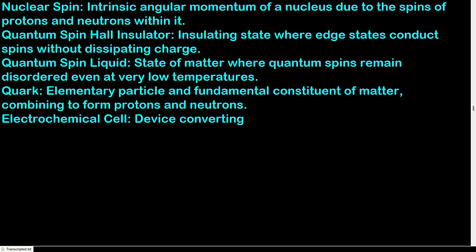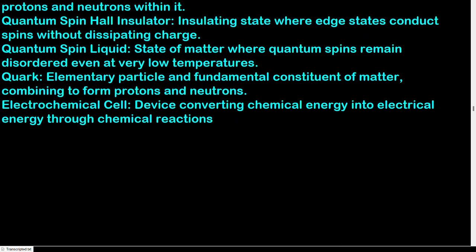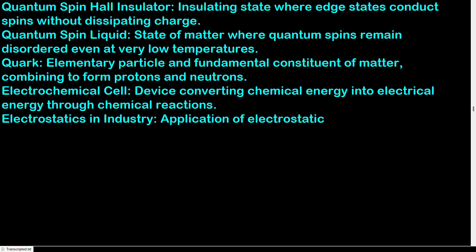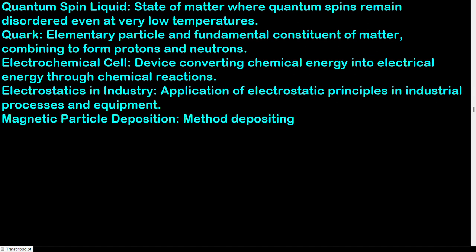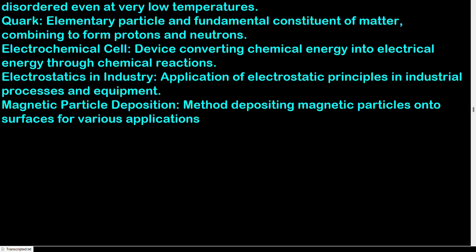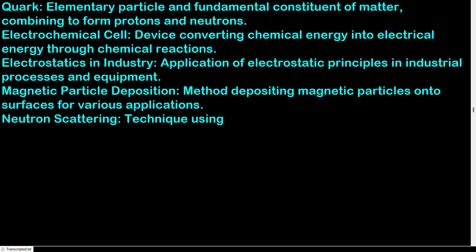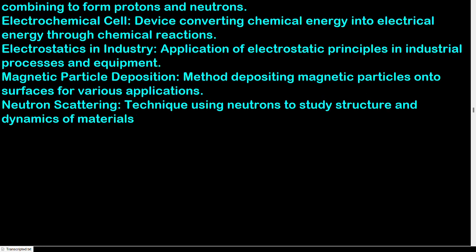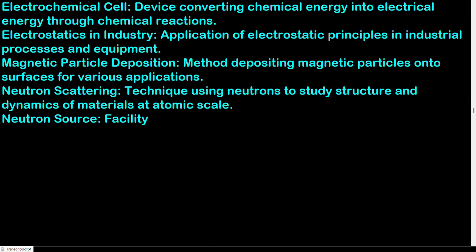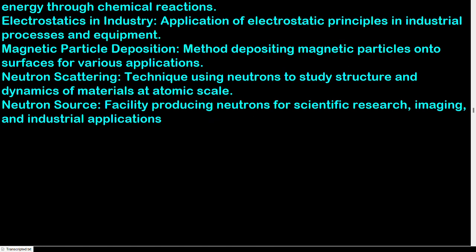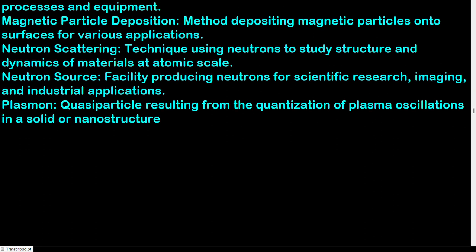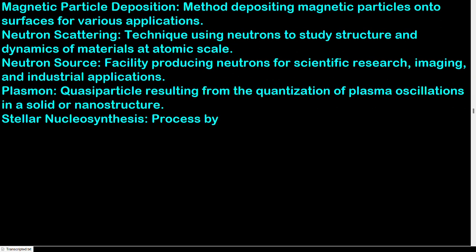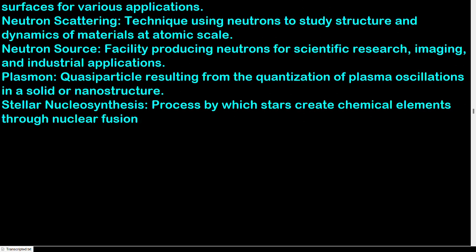Electrostatics in industry: application of electrostatic principles in industrial processes and equipment. Magnetic particle deposition: method depositing magnetic particles onto surfaces for various applications. Neutron scattering: technique using neutrons to study structure and dynamics of materials at atomic scale. Neutron source: facility producing neutrons for scientific research, imaging, and industrial applications. Plasmon: quasiparticle resulting from the quantization of plasma oscillations in a solid or nanostructure. Stellar nucleosynthesis: process by which stars create chemical elements through nuclear fusion reactions.